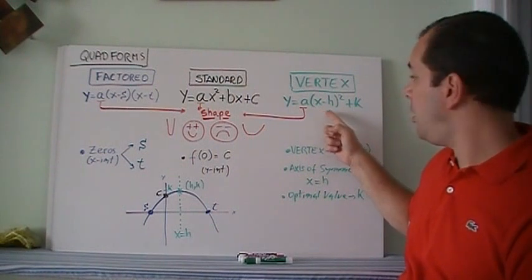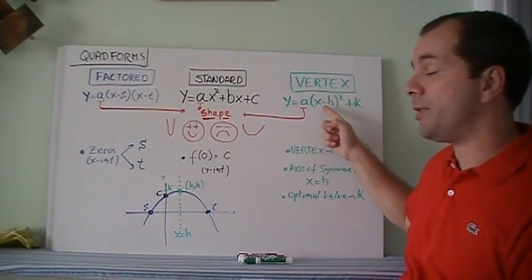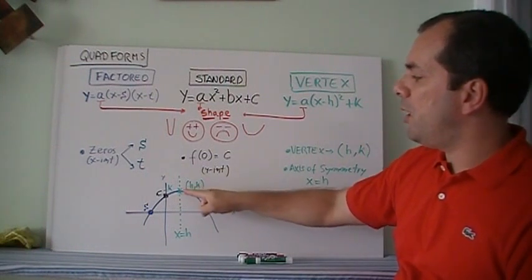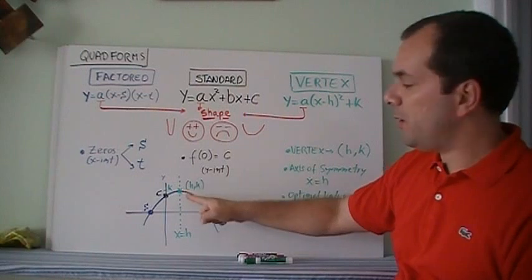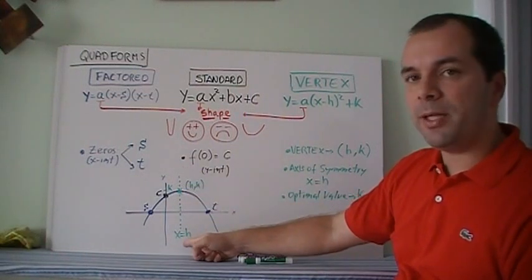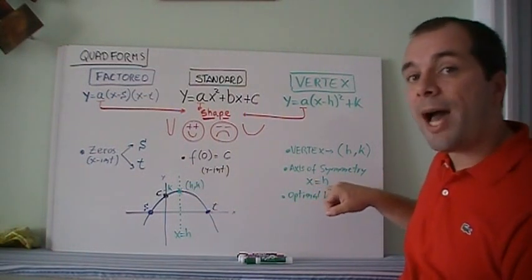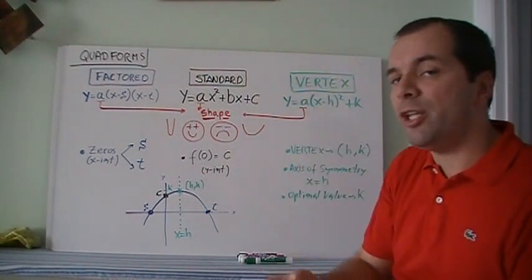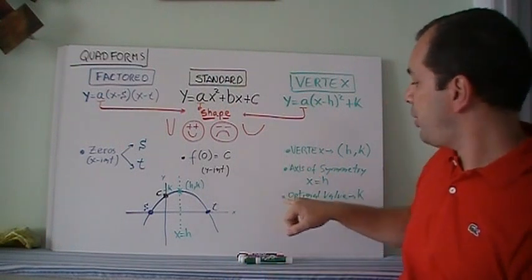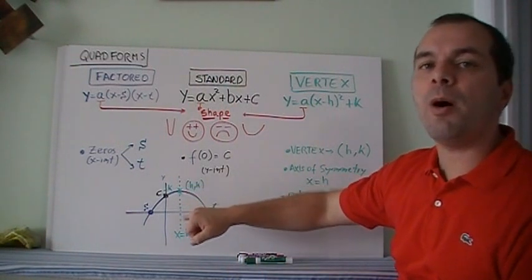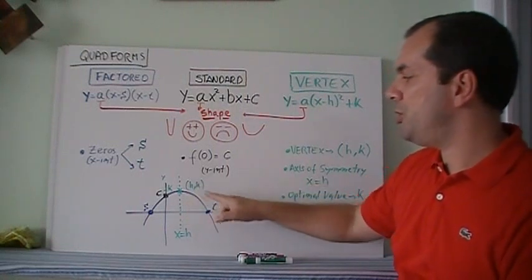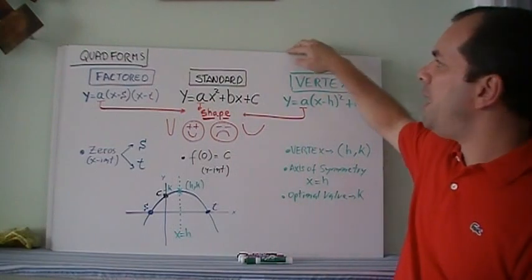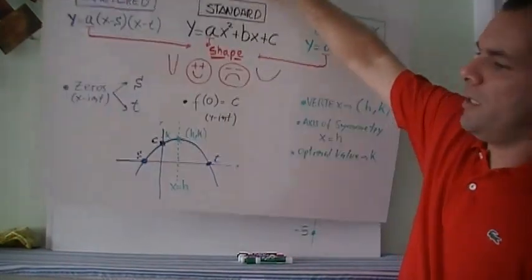From vertex form, you get the vertex, which is h and k. The x-coordinate h is the number that makes the bracket go to zero, and k is the value written at the end. Because the vertex is in the middle, the axis of symmetry goes through it, so the axis of symmetry is x = h — written as an equation because it's a vertical line. The optimal value, meaning the maximum or minimum, is simply k.